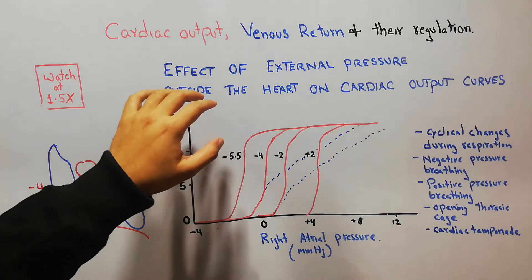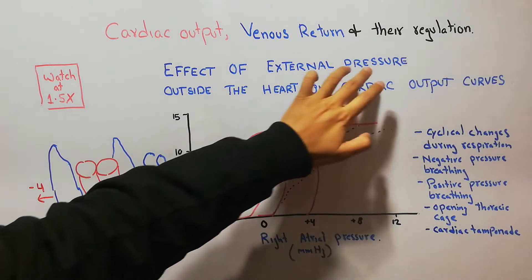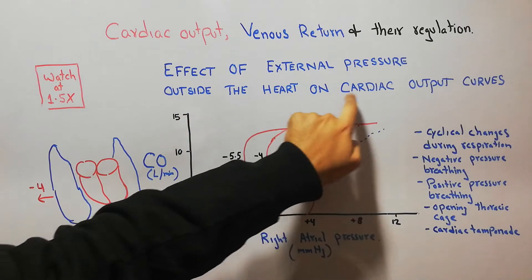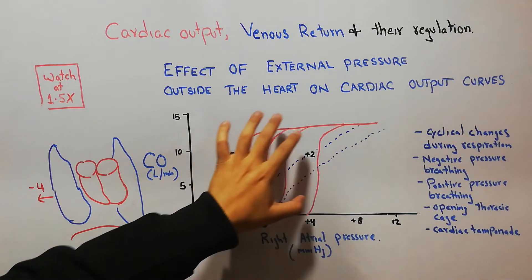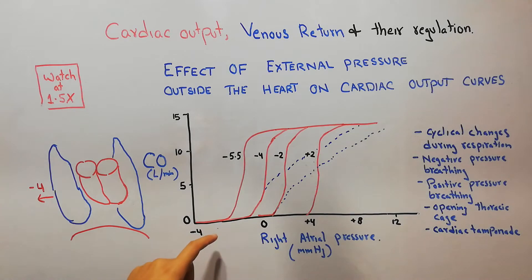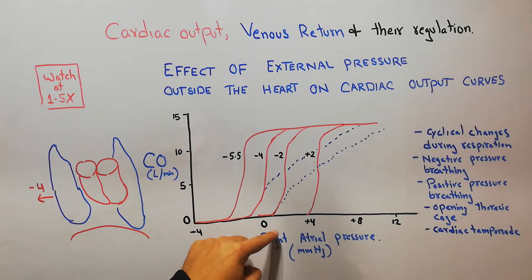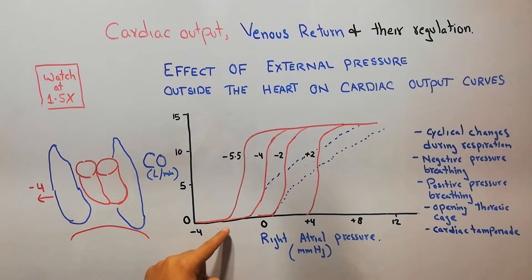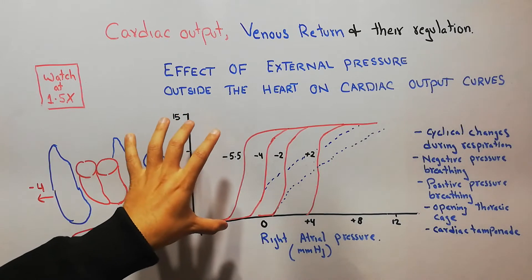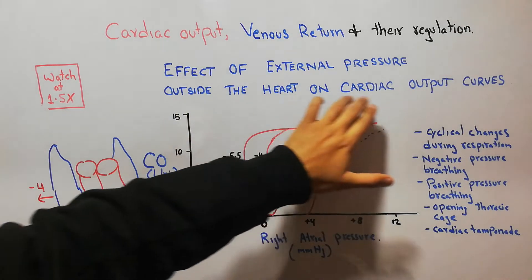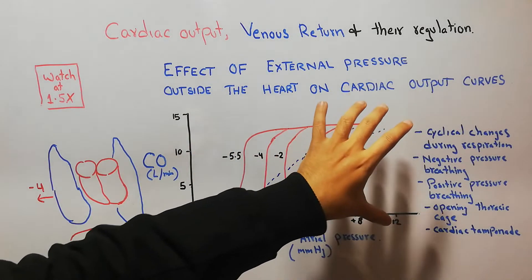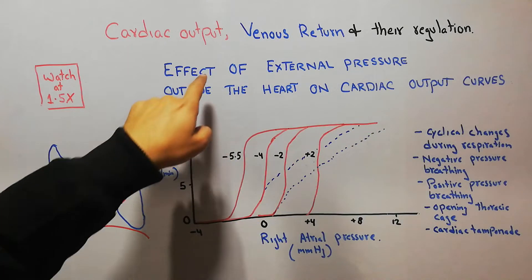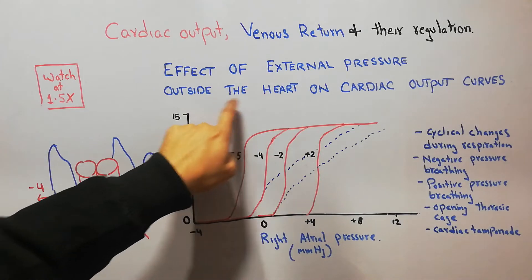Today in this lecture we are going to discuss the effect of external pressure outside the heart on cardiac output curves. Previously we discussed the cardiac function curve or the cardiac output curve. Here again we are plotting the same cardiac output curve or the cardiac function curve, but we will discuss it in detail with different factors which will increase the external pressure outside the heart.